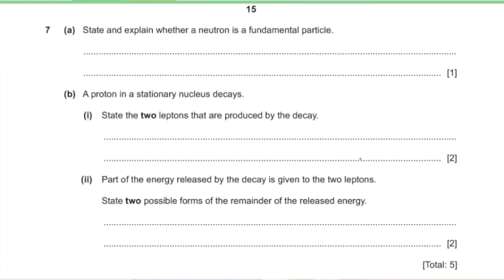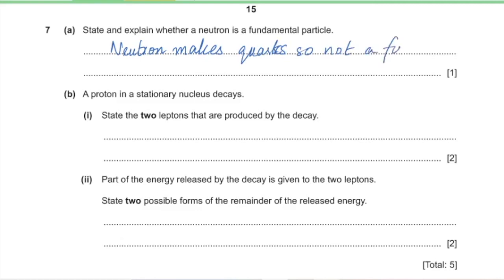Question 7, part A: state and explain whether a neutron is a fundamental particle. A fundamental particle cannot be broken down into smaller constituents. A neutron is made up of quarks, so it is not a fundamental particle.